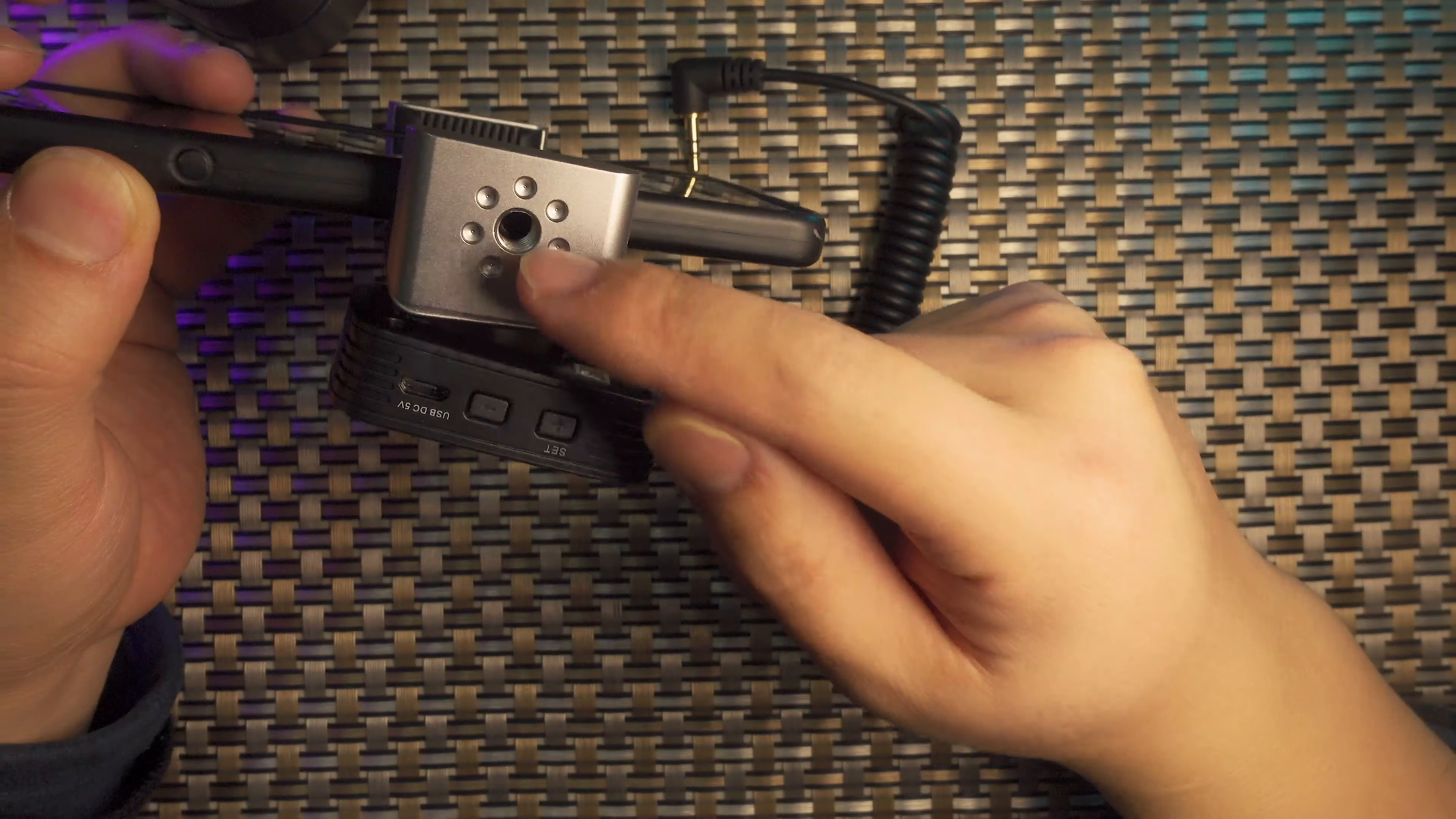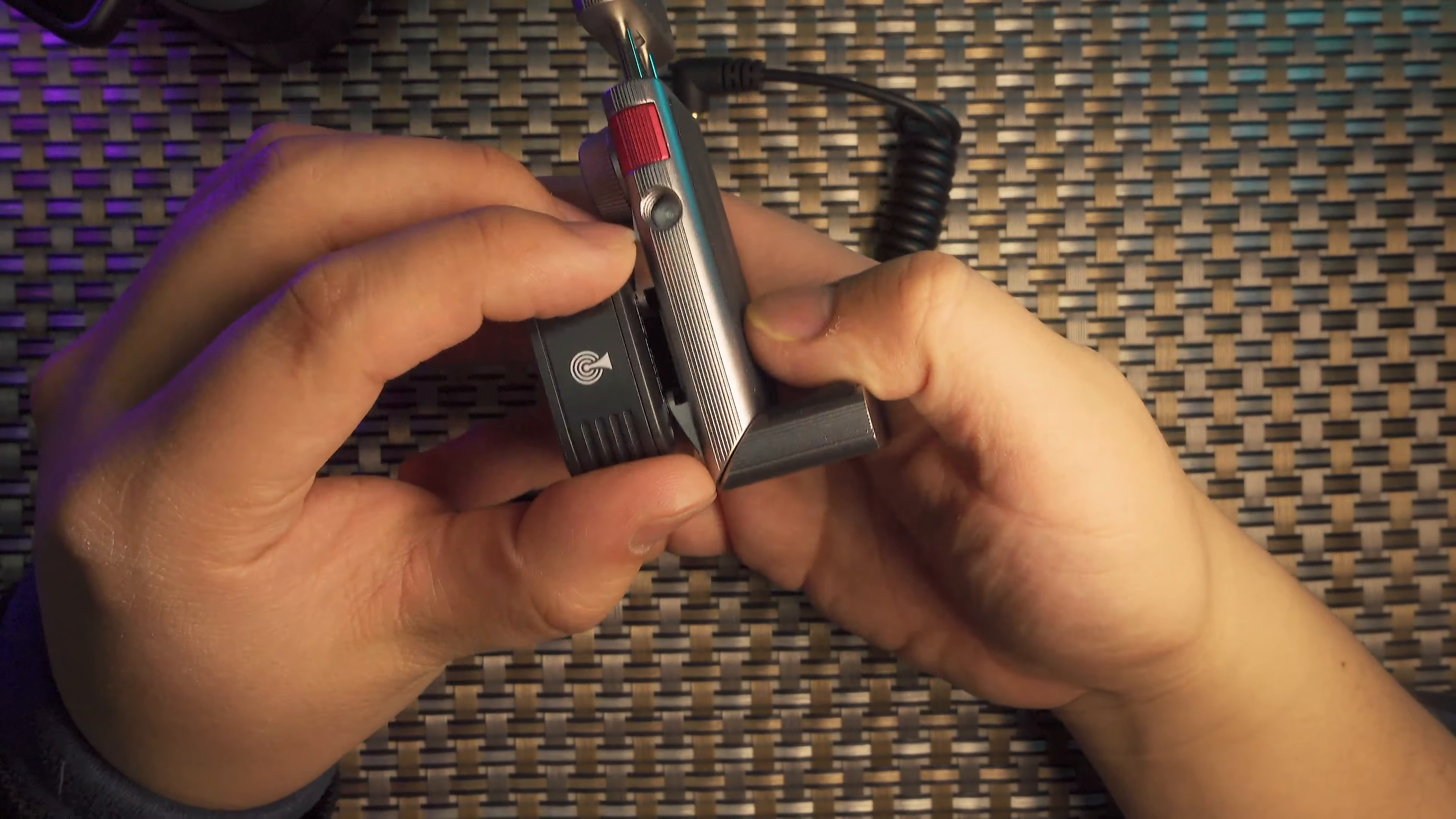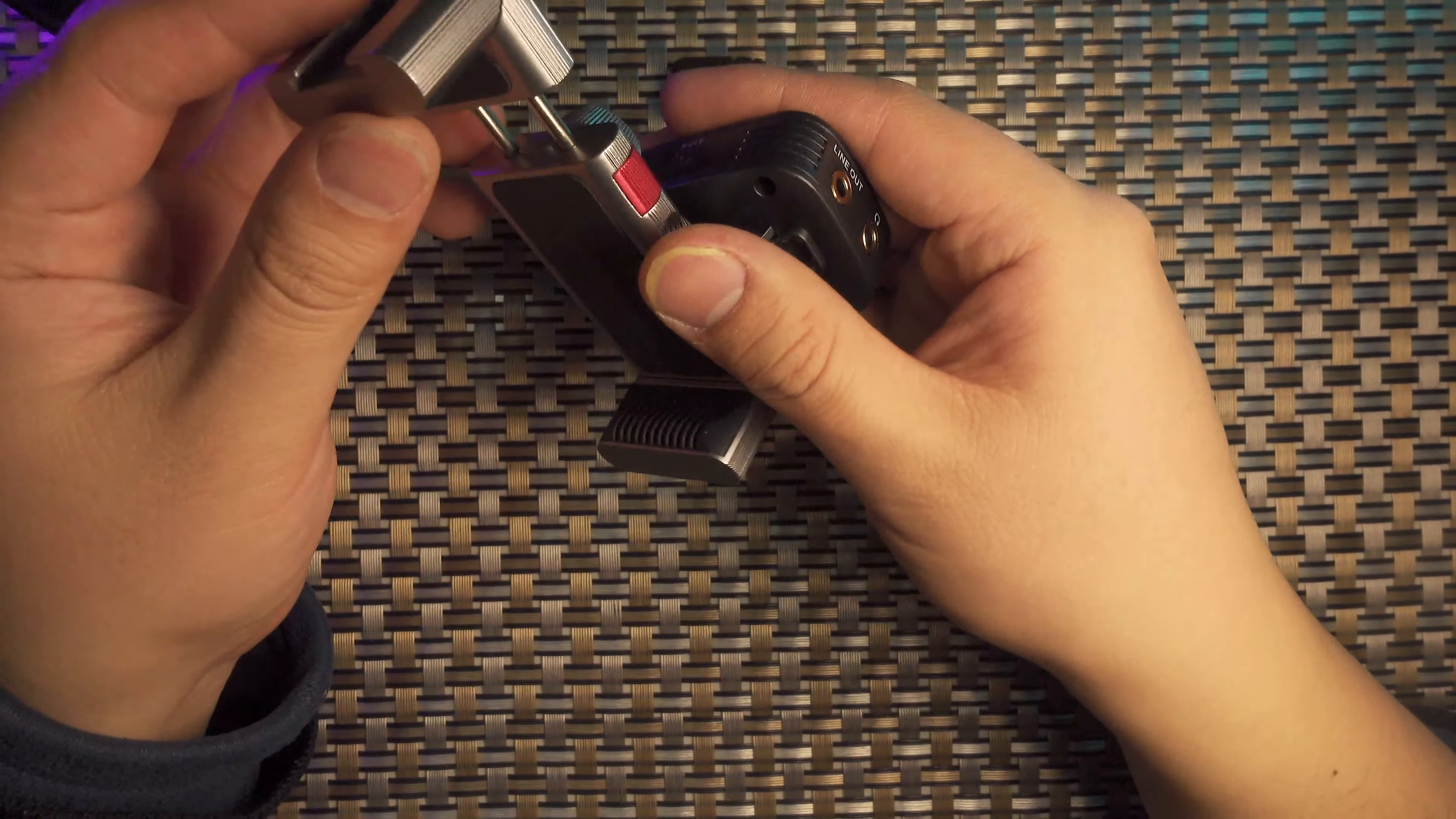On the bottom, there is a quarter-inch thread that fits nicely on most tripods. More importantly, on the sides, there are two more quarter-inch threads on the left and right. So altogether, there are three quarter-inch mounts on this phone clamp.